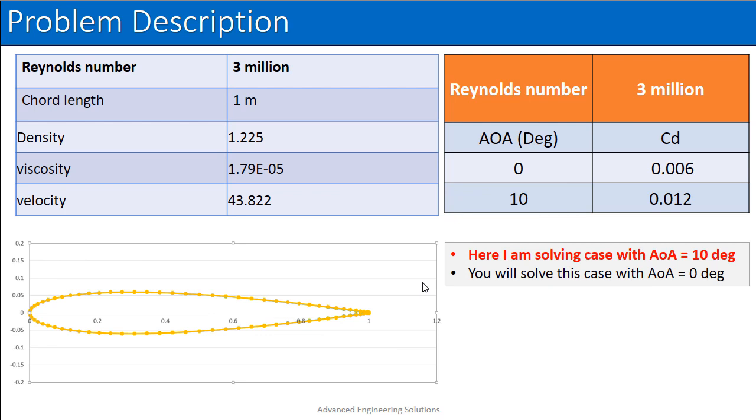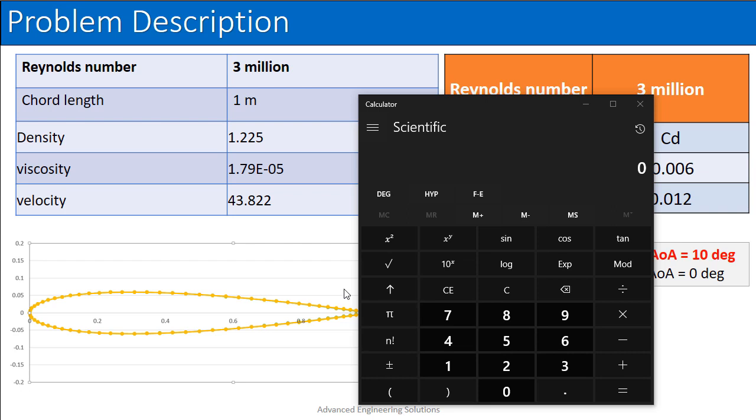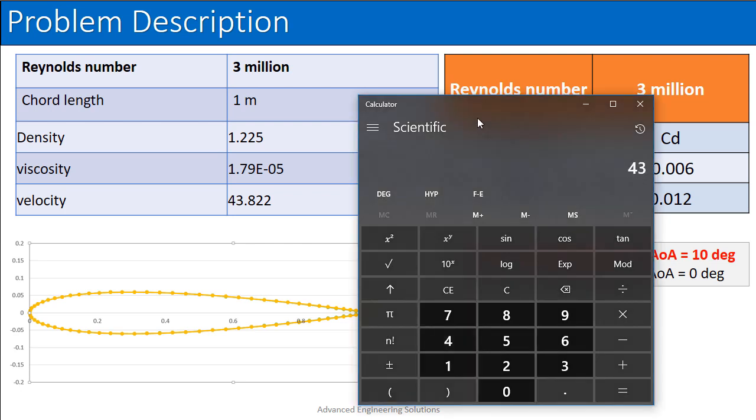So from this value of velocity you can estimate the Mach number and based on this Mach number you can judge whether the flow is compressible or incompressible. So if I divide 43.822 by the speed of sound which is approximately 340 at sea level, we will get the Mach number as 0.128. And since its value is less than 0.3, we can safely assume that the flow is incompressible.